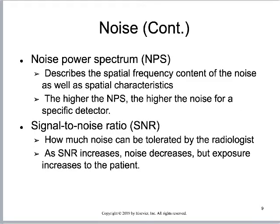Quantum noise — a lot of these terms are nerdy, but you need to recognize them for boards. Quantum mottle is the way that scatter looks on a digital picture. We can quantify noise as ratios. The two ways we'll talk about it are the noise power spectrum, which is a newer term, and the good old-fashioned signal-to-noise ratio.